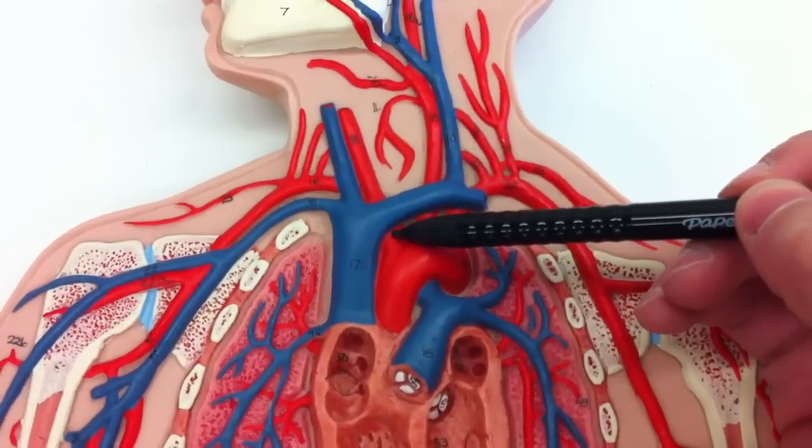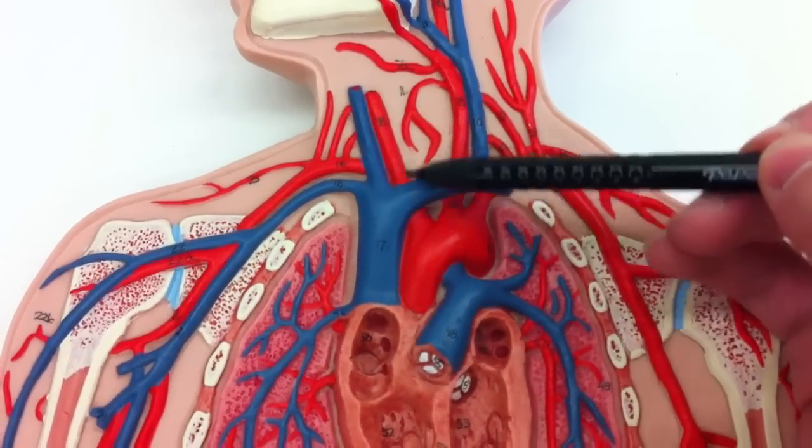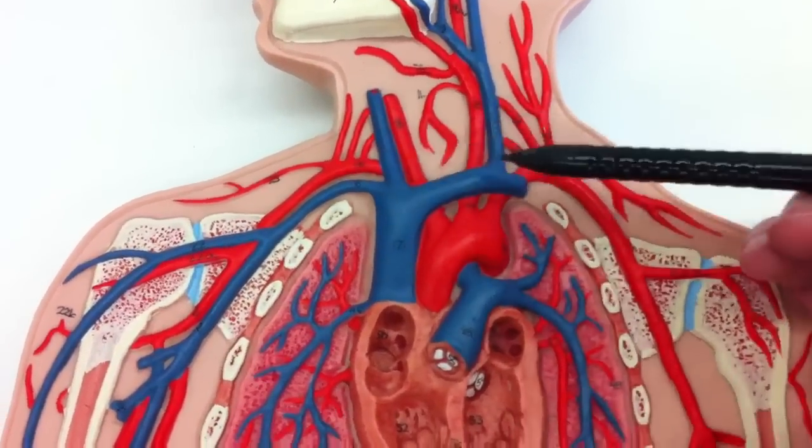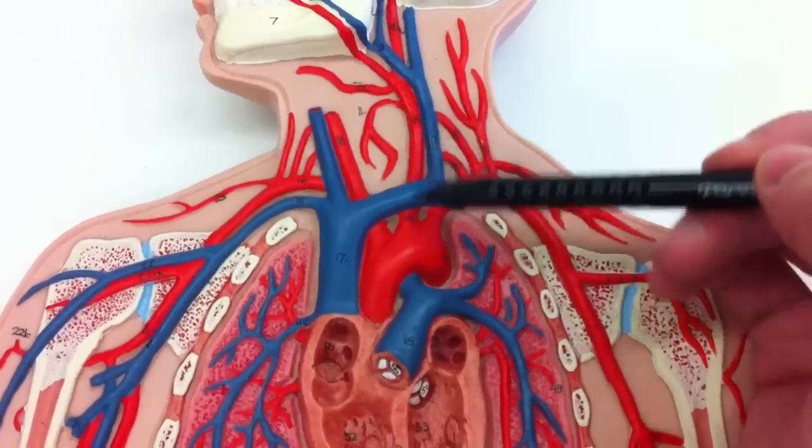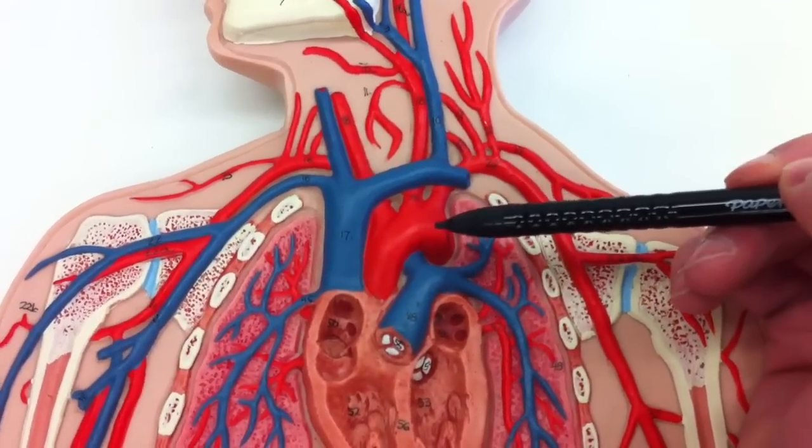And then you have the brachiocephalic trunk, which will have the right common carotid and the right subclavian. The left subclavian and the left common carotid each have their own direct connections to the aorta.